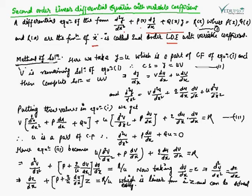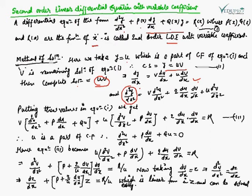The method for this type of solution is to let y = u·v, where u is part of the complementary function (CF). The complete solution is y = u·v. Since y = u·v, differentiating with respect to x gives dy/dx = v·(du/dx) + u·(dv/dx). Similarly, d²y/dx² can be found. Substituting into the original equation gives: v·(d²u/dx²) + P·(du/dx) + Q·u + u·[d²v/dx² + P·dv/dx + 2·(du/dx)·(dv/dx)] = R.